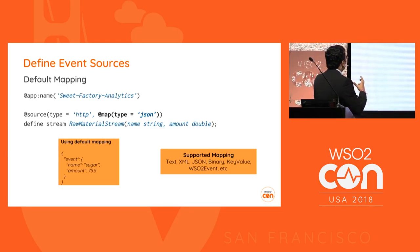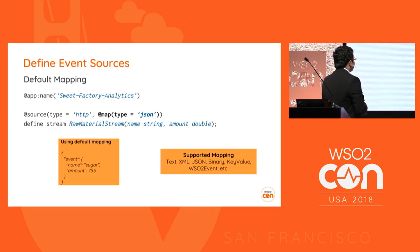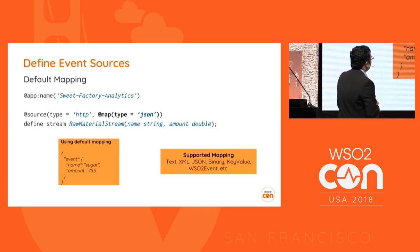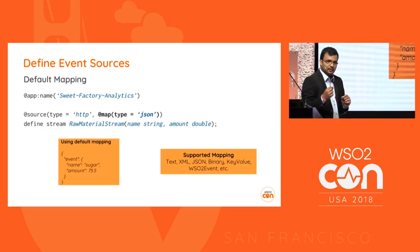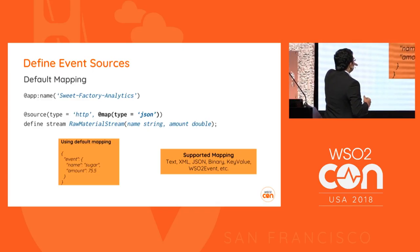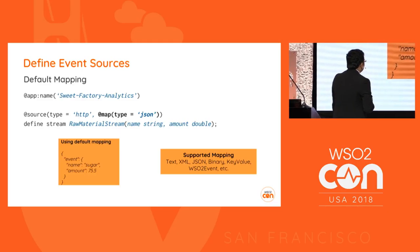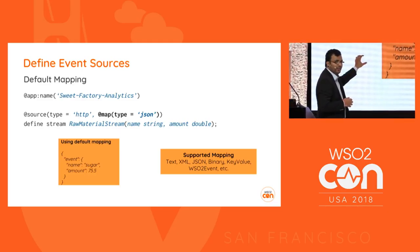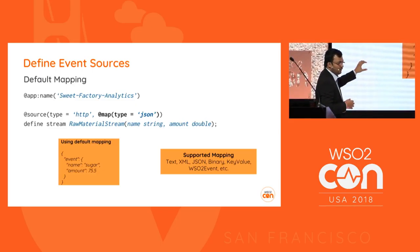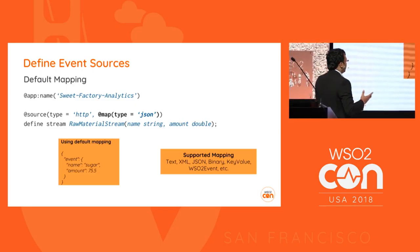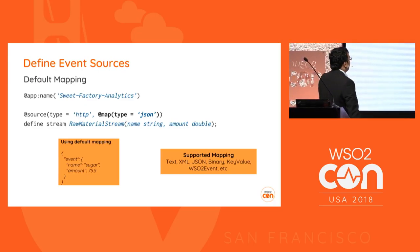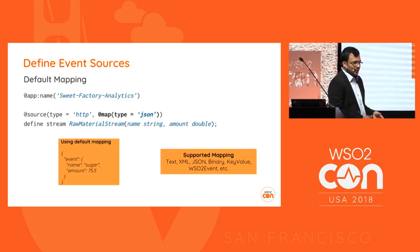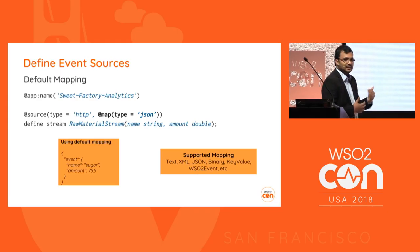For mapping, there is a default mapping concept where events are sent in a predefined format. For example, if sending JSON, the predefined format is a JSON event object with an 'event' tag inside which you place the attributes defined in the stream - in this case 'name' and 'amount.' For custom mapping, if you have your own data format, you perform mapping at the stream processor level using JSON path to derive specific information into a stream.